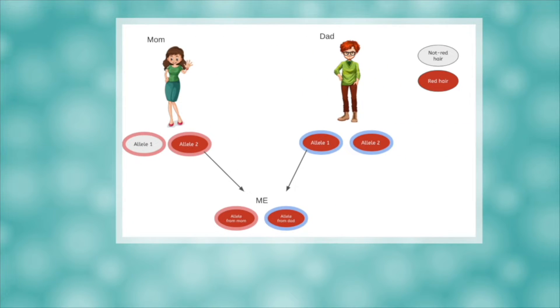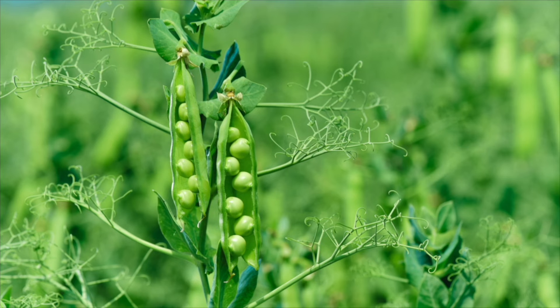Before we try our hand at filling out a Punnett square, let's review some important things we already know. Each parent has two alleles for every gene, but will only be able to pass on one of those two alleles to each offspring they may have. You might remember this example from way back in unit one, looking at the alleles you inherit for red hair. We'll be looking at traits in pea plants today, but the same rules apply.